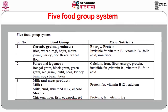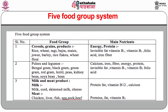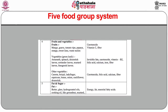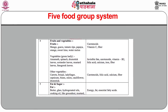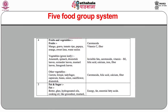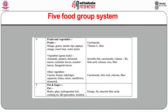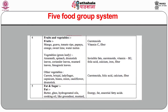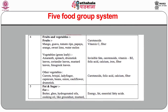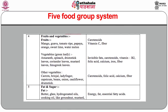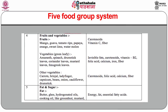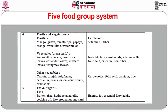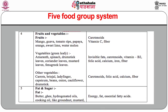Milk and meat products include milk, curd, skim milk, cheese, meat, chicken, liver, fish and egg — providing protein, fat, Vitamin B12, calcium, and Vitamin B2. Fruits and vegetables include mango, guava, tomato, papaya, orange, sweet lime and watermelon. Green leafy vegetables include amaranth, spinach, drumstick leaves, coriander leaves, mustard leaves and fenugreek leaves, providing carotenoids, Vitamin C, fiber, calcium and iron.